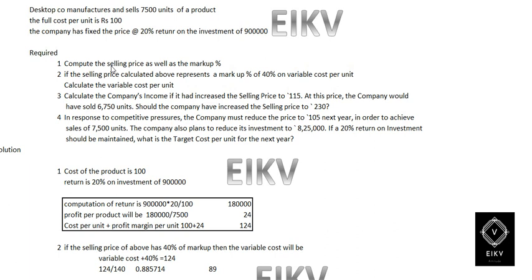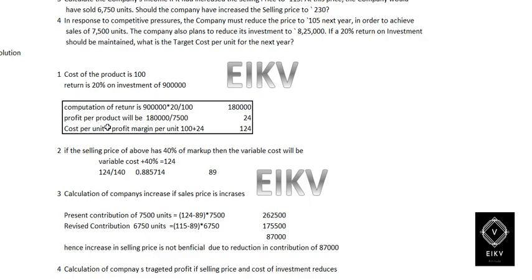Requirement number one: compute the selling price and the markup percentage. The cost of the product is 100 rupees. The investment is 9 lakh and we need a 20 percentage return on that. 9 lakh multiplied by 20 percentage gives 1 lakh 80,000. Dividing 1 lakh 80,000 by 7,500 units gives 24 per unit. So the markup is 24 rupees and the selling price is 124 rupees.